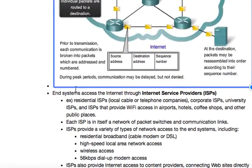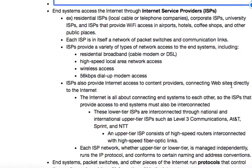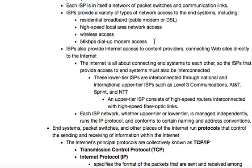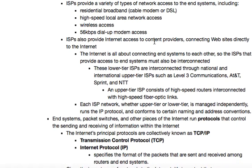End systems access the internet through ISPs, internet service providers. There are residential ISPs like local cable or telephone companies, corporate ISPs, universities, and ones that provide Wi-Fi, like in Starbucks. Each ISP is itself a network of packet switches and communication links. ISPs provide a variety of types of network access, including residential broadband, local area network access, wireless access, or dial-up, which nobody really uses these days.